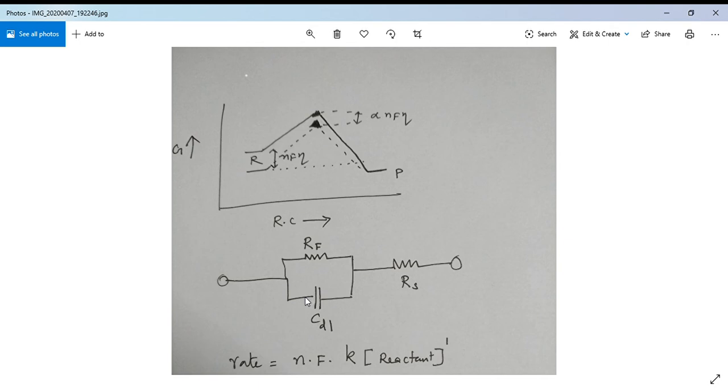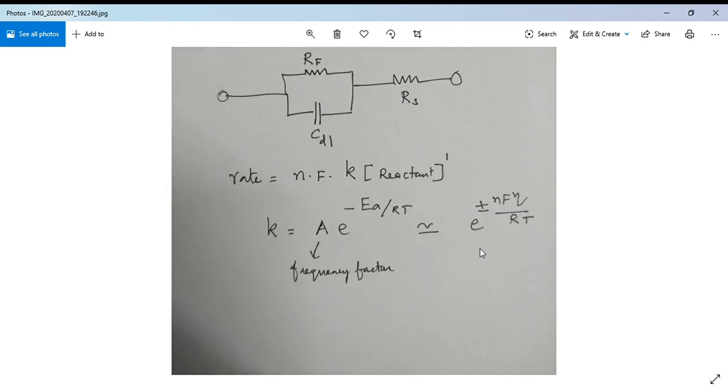you would see a different value for RF. Therefore, the total impedance of the circuit will change. We can write the rate of the reaction as n·f·k, where k is a